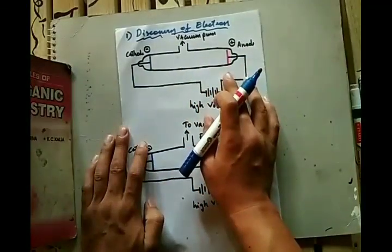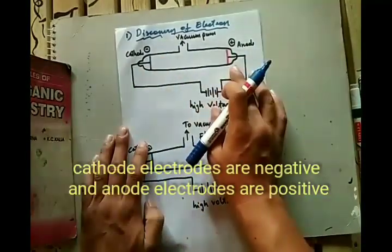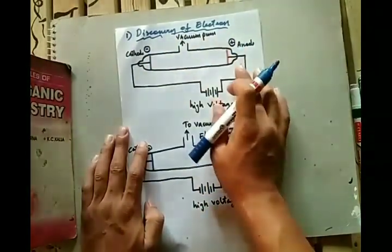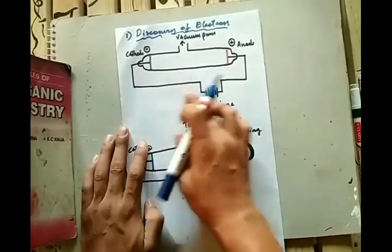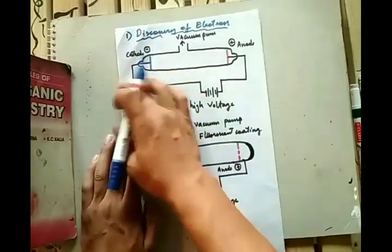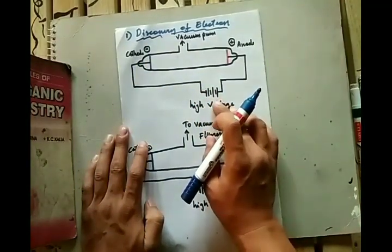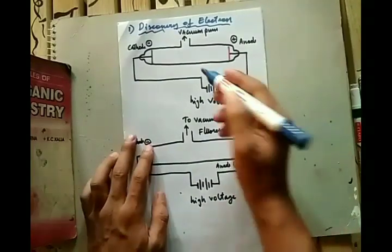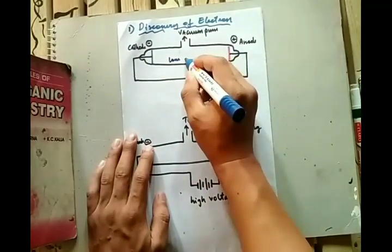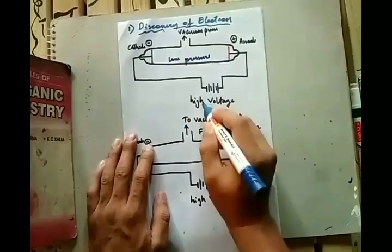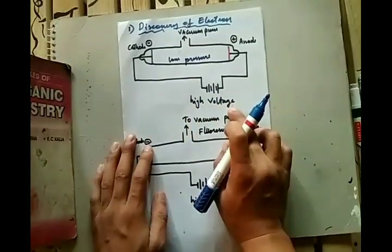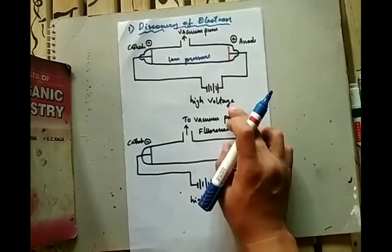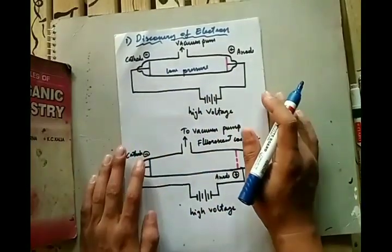In the cathode ray discharge tube, there are two metal plates or electrodes inside the glass tube, and there is a vacuum pump to maintain the pressure of the gas. This electrode strip is connected to a high voltage source. The electrical discharge is observed when there is low pressure and high voltage.